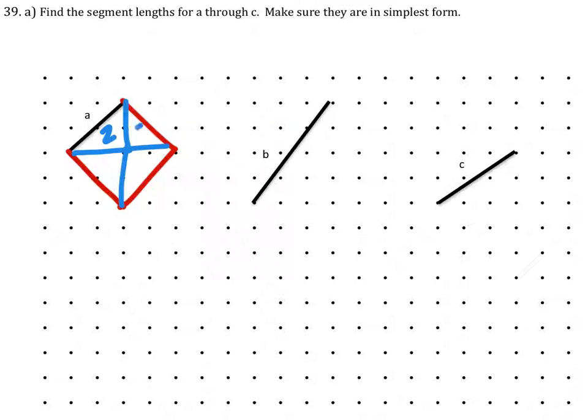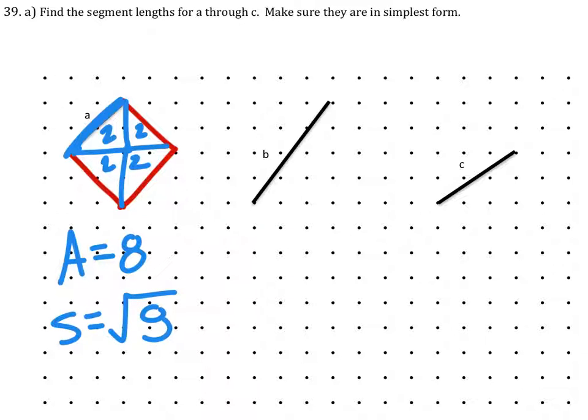So if we split this up, this one is two, two, and two. And so the area of the square is eight. So the length of this one, the side length, is the square root of eight, which also simplifies. So A is two times the square root of two.